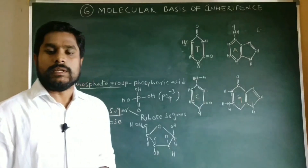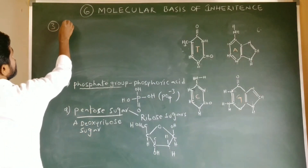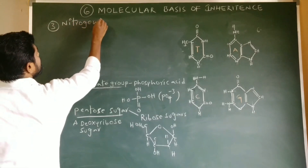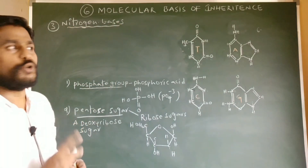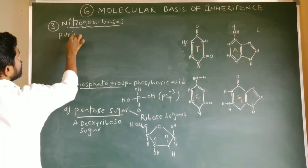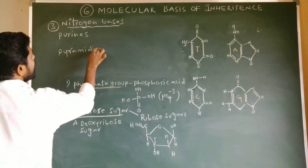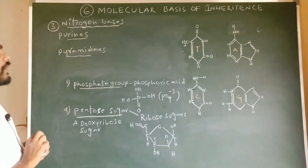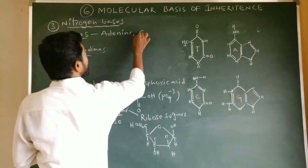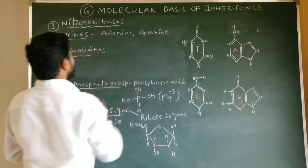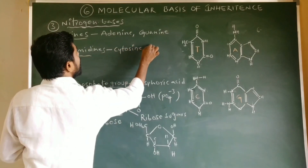The third chemical component of nucleotides is nitrogen bases. The nitrogen bases are majorly categorized into two groups: purines and pyrimidines. The purines are adenine and guanine, whereas the pyrimidines are cytosine and thymine.